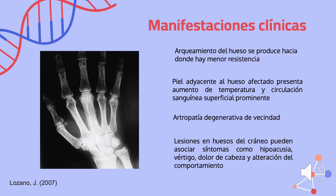El arqueamiento del hueso se produce hacia donde hay una menor resistencia, y la piel adyacente al hueso afectado presenta un aumento de temperatura y una circulación sanguínea superficial prominente. Se presenta una artropatía degenerativa de vecindad, que es causada por lesiones que están cerca de la articulación, y cuando se presentan lesiones en huesos del cráneo pueden asociar síntomas como hipoacusia, vértigo, que es una sensación de movimientos o giros como mareo, dolor de cabeza y alteración del comportamiento como la demencia.